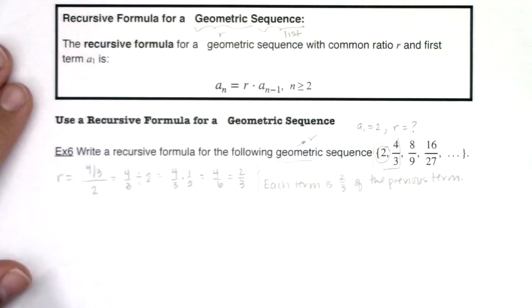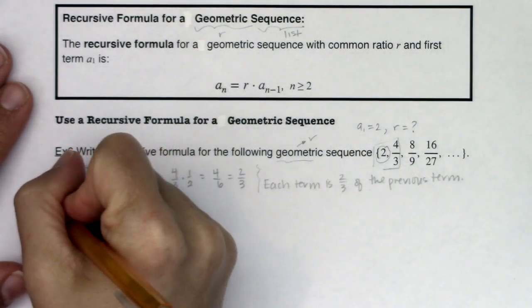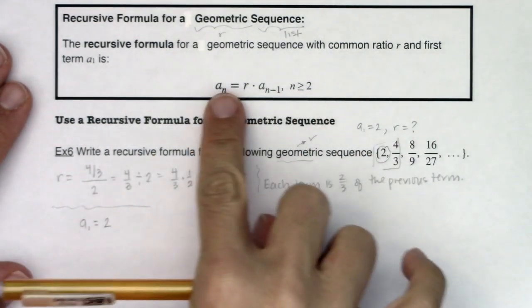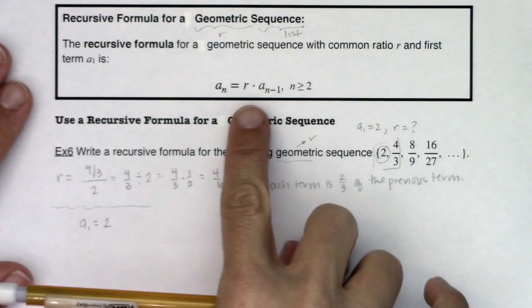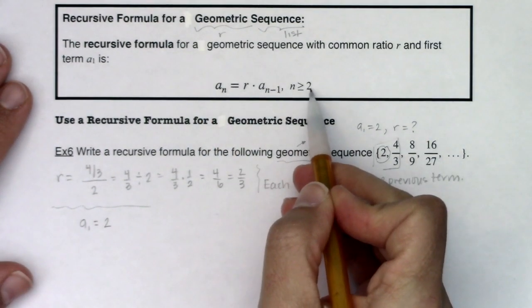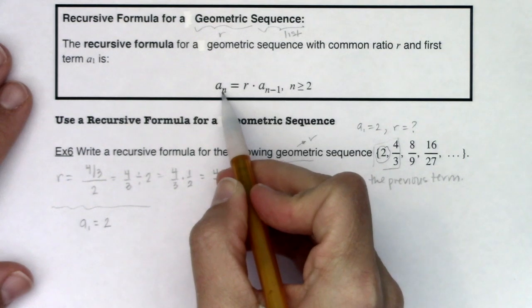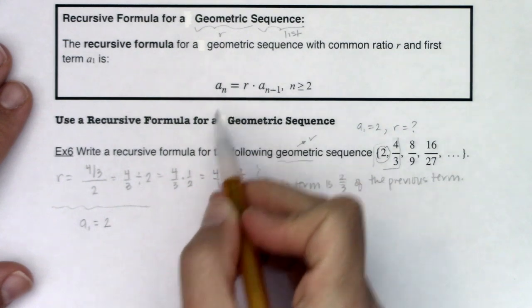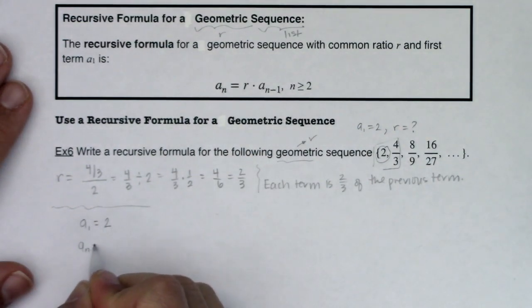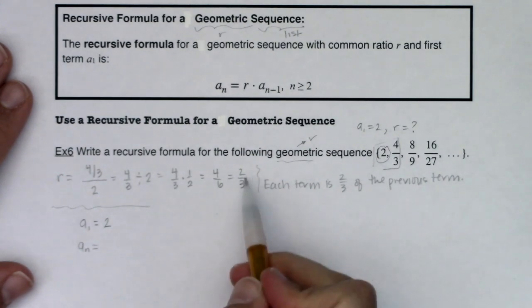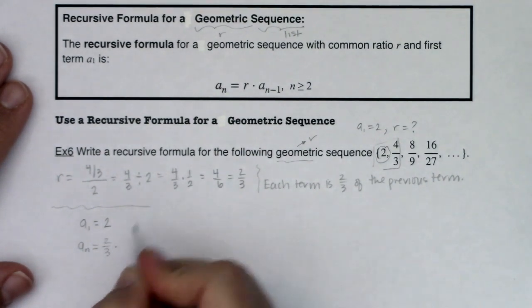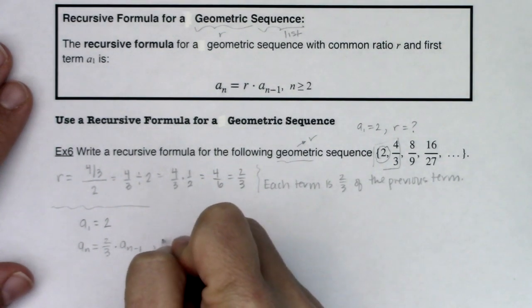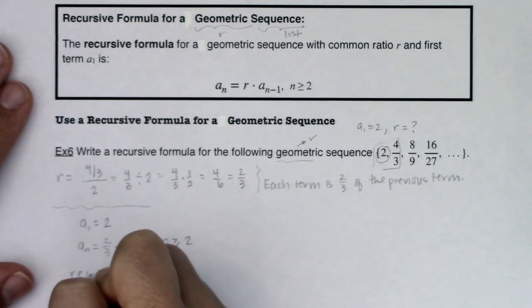So how do I write this up as a recursive formula? Well, for recursive formulas, you need your starting value, which in this case was 2, and then we're going to apply this. For every term after a sub 1, so as long as n is greater than or equal to 2, meaning this is a sub 2, or a sub 3, or a sub 4, or a sub 5, basically the only thing it can't say is a sub 1. That's our starting point. Then a sub n will be equal to r, and our r was 2 thirds times a sub n minus 1. That's it. This is the recursive formula.